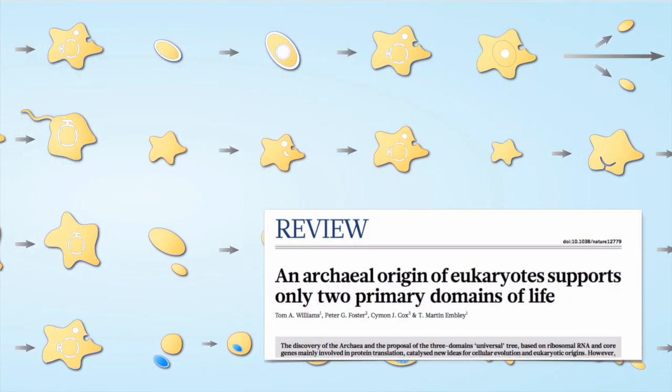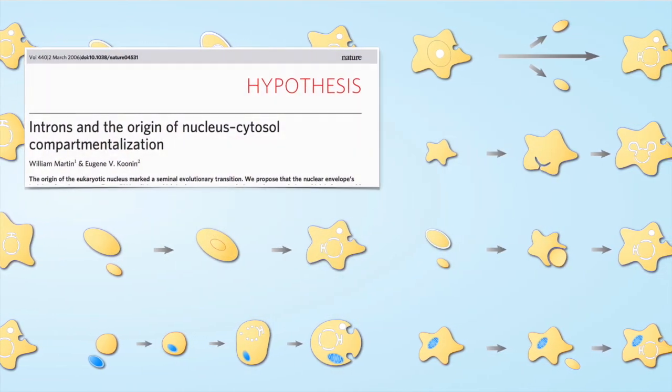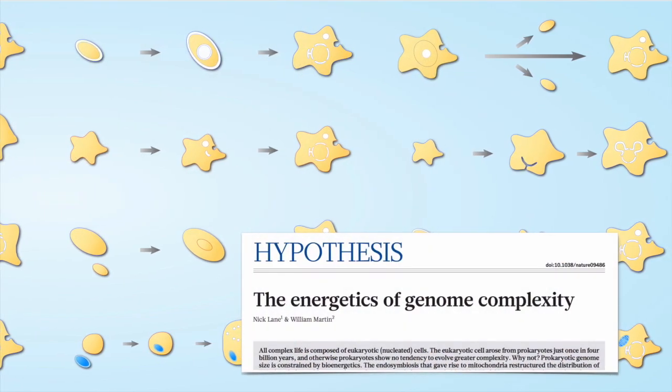But current phylogenetic studies have it that mitochondria arose in an archaeal host through endosymbiosis and that mitochondria were present in the eukaryotic common ancestor.